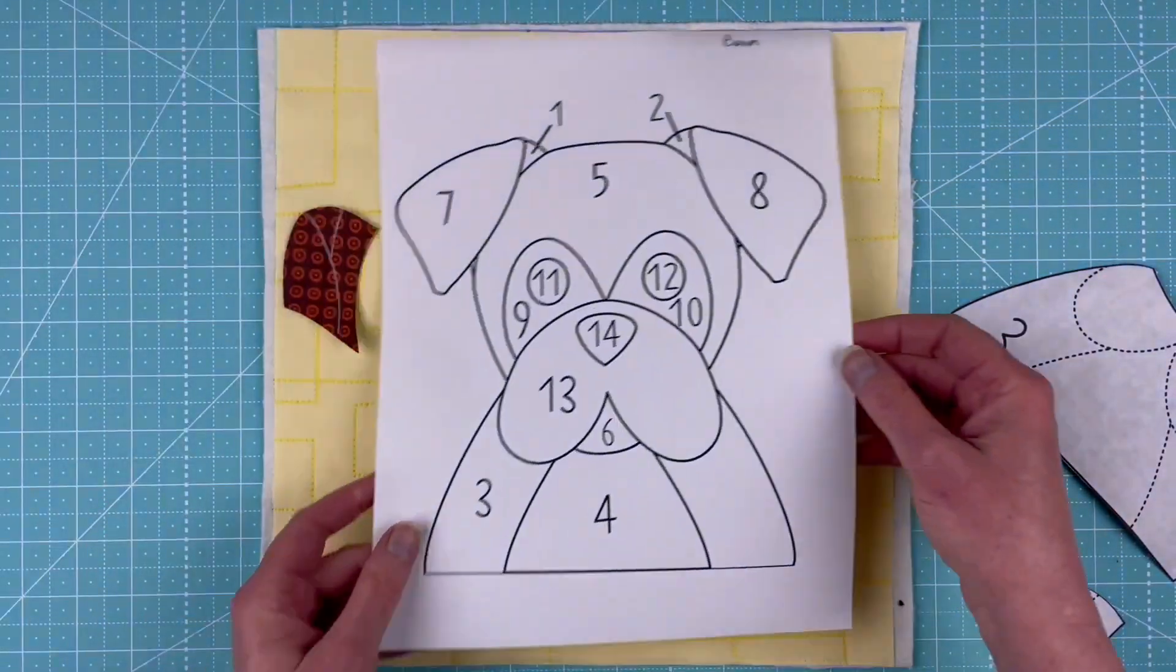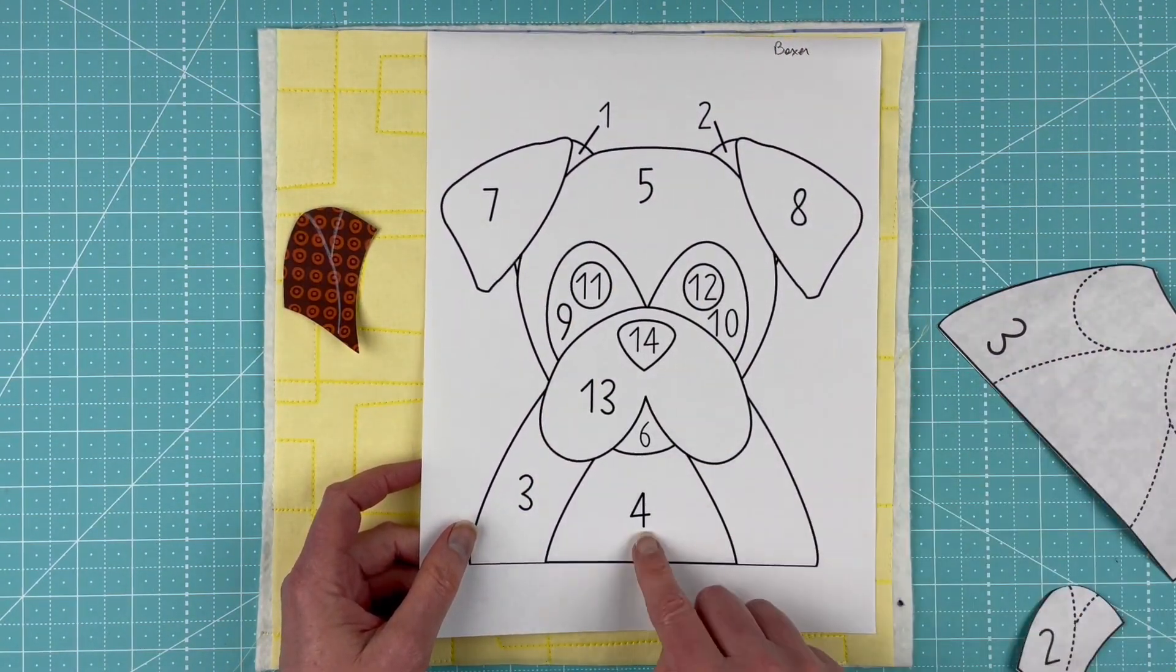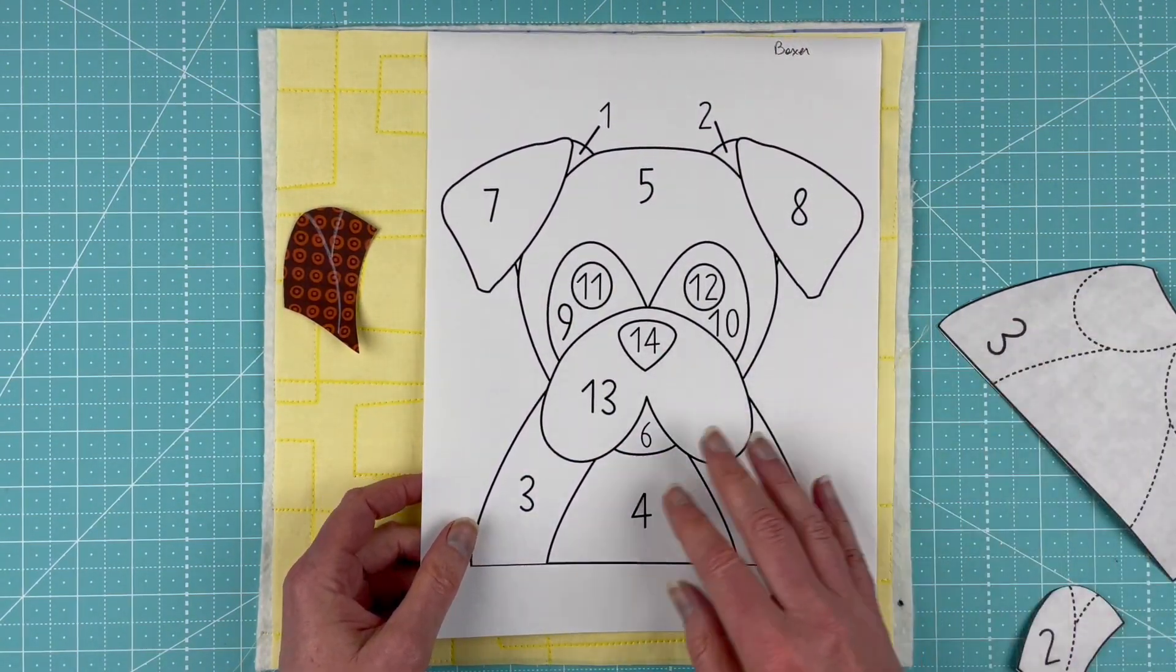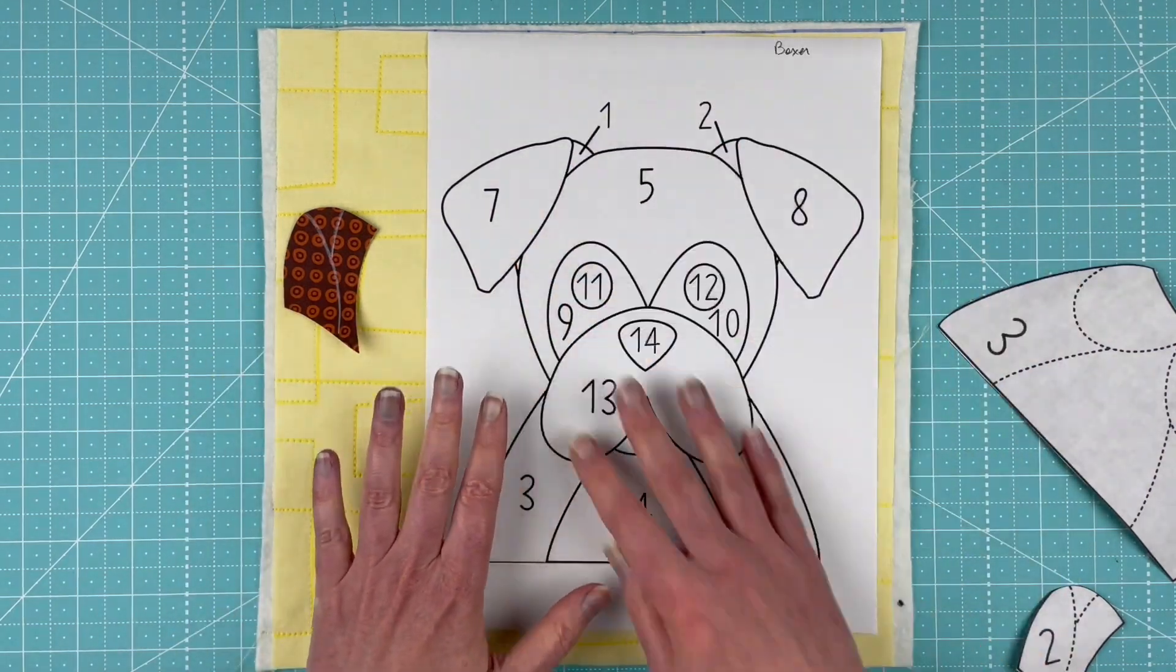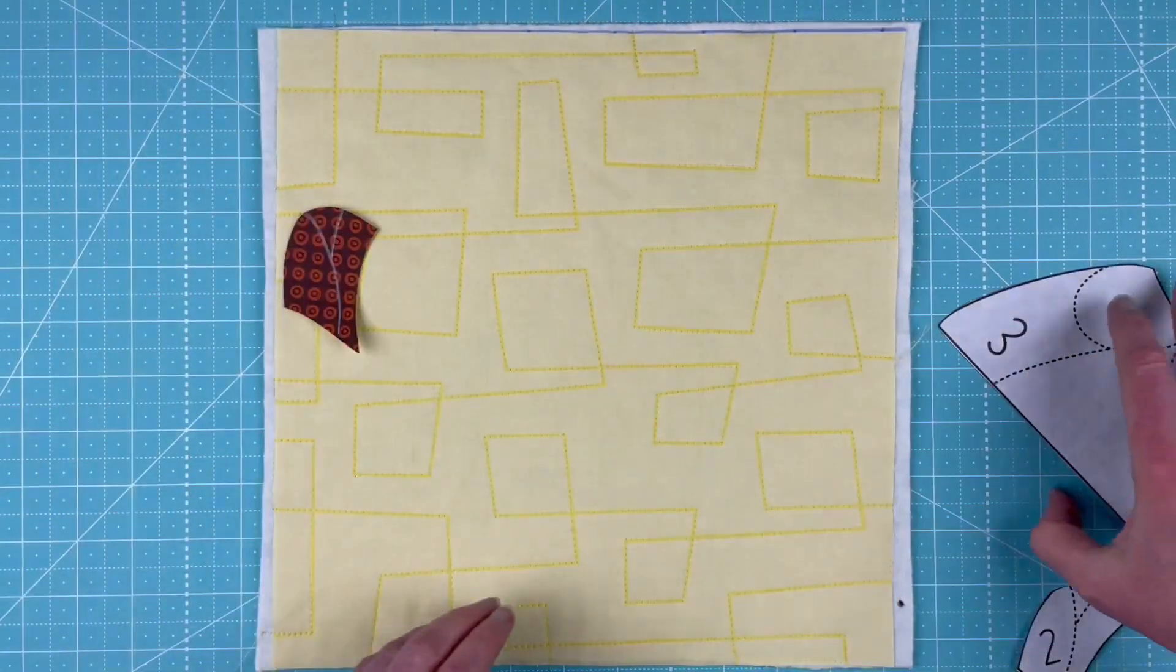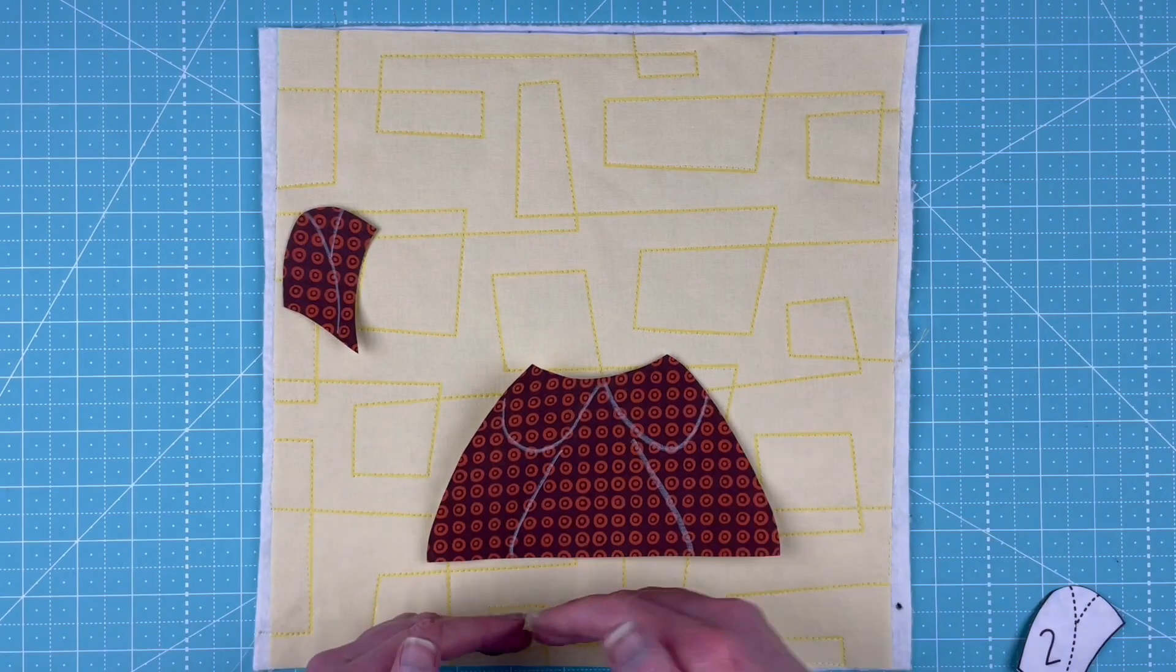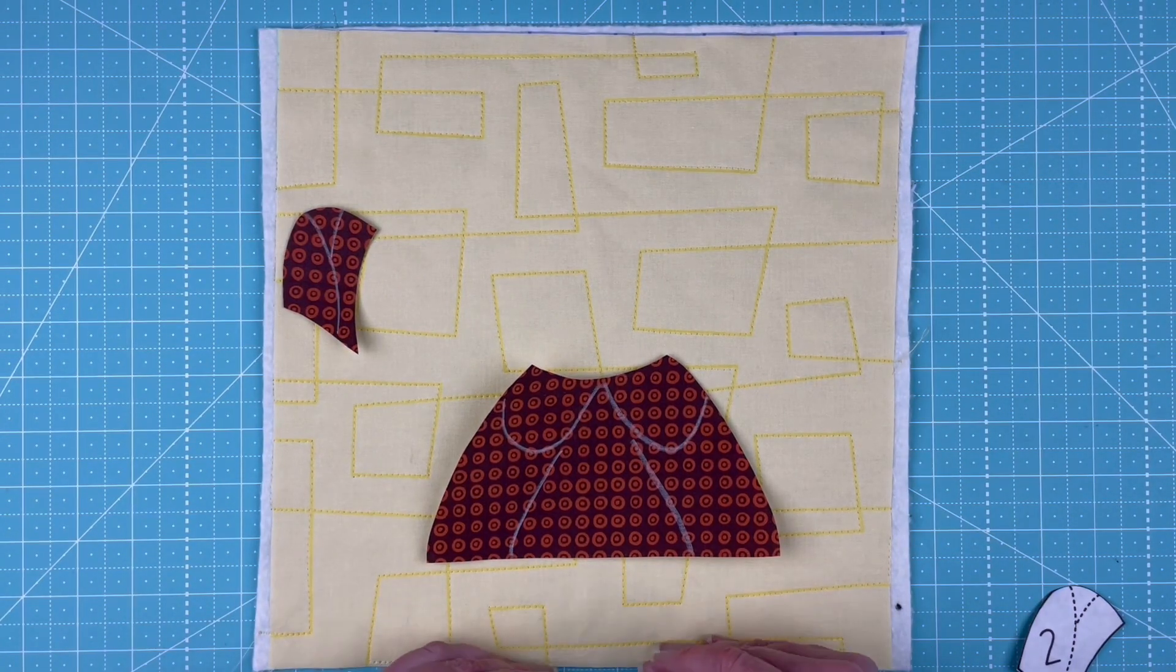When I do it without a light box, you've got a placement guide that shows you and keys to all of the different pieces. For a light box it tells you in what order to lay them down, but when I'm doing without a light box I ignore that order.